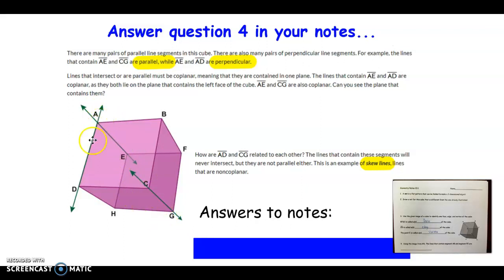Now I want you to look at segment AD and CG. Would those two lines ever intersect each other? No. But they're not parallel, are they? We have a special name for those lines. They're called skew lines. So skew lines are also a pair of lines that never intersect, but they are not in the same plane. So line CG and line AD are examples of that.